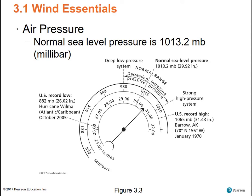The highest air pressure is recorded in the United States under very cold conditions in Barrow, Alaska, in January, and the lowest air pressure is recorded in hurricanes. Tropical hurricanes typically are the places where you're going to find the world's lowest air pressure: 882 millibars. Normal average sea level pressure is 1,013.2 millibars.